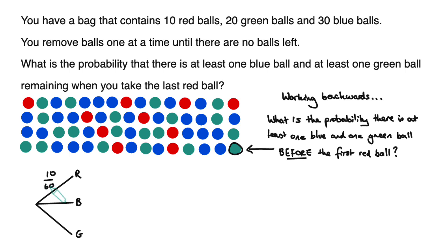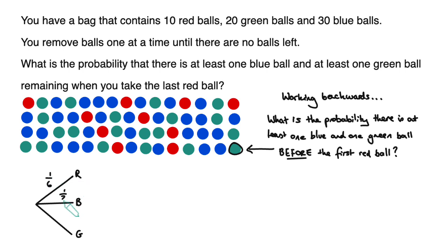The probability that the first ball is red is 10/60, the probability it's blue is 30/60, and the probability it's green is 20/60. These simplify down to 1/6, 1/2, and 1/3 respectively.